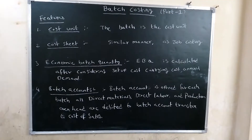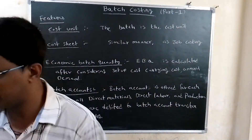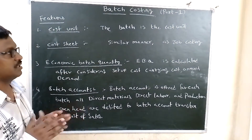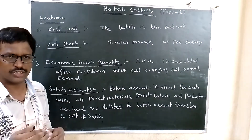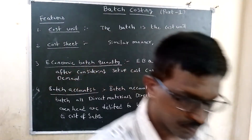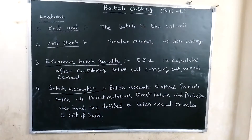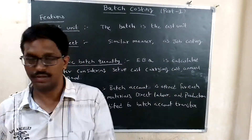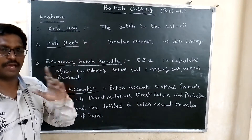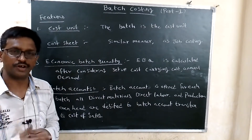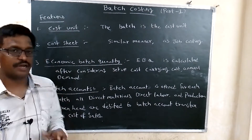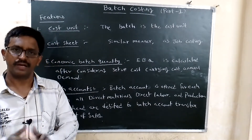Features of batch costing. First: cost unit — the batch is the cost unit. We need to know the cost per unit. This batch costing is similar to job costing in that a cost sheet is prepared.